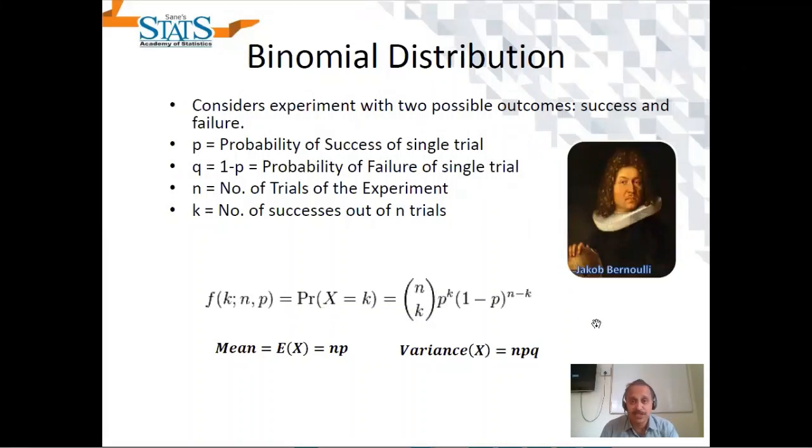Binomial distribution states that the PMF is NCK P raise to K and Q or 1-P raise to N-K. That is our binomial distribution with mean and variance as mentioned.